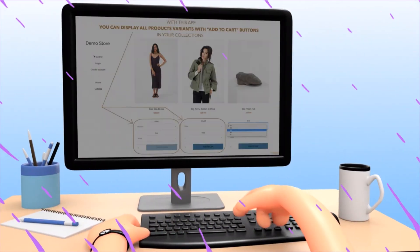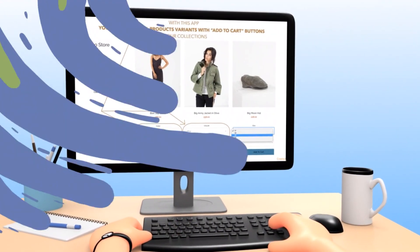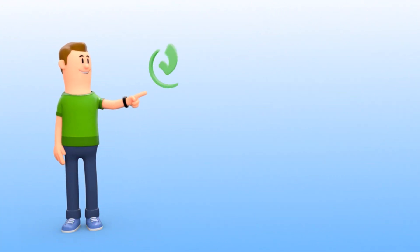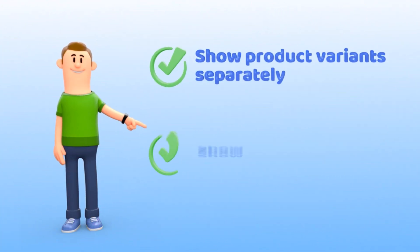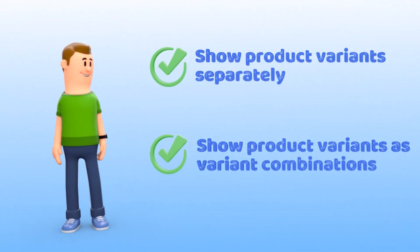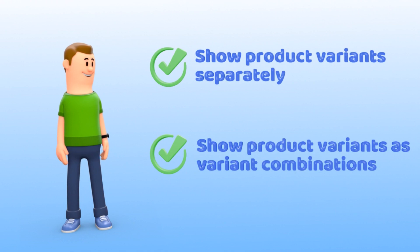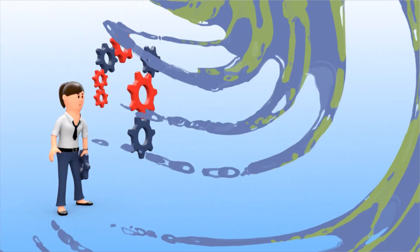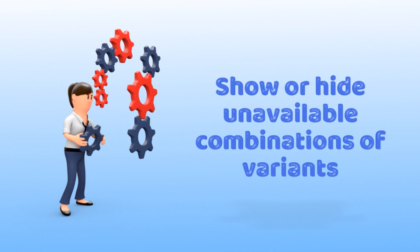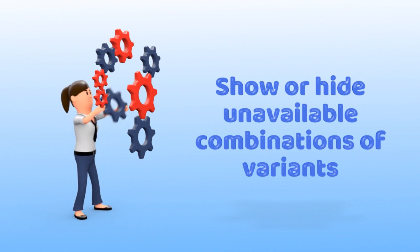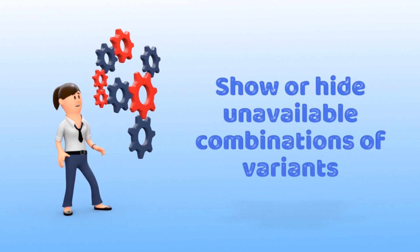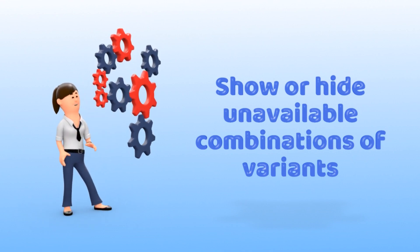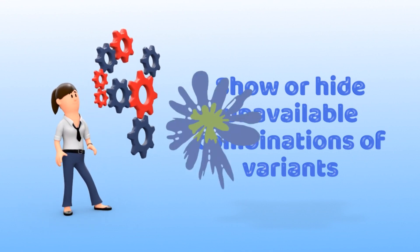Here is an example. You can show your product variants separately or as variant combinations in one drop-down, making it easy for customers to select the exact product they're looking for. And you can also choose to show or hide unavailable combinations of variants, giving your customers a simpler shopping experience.